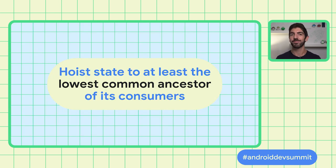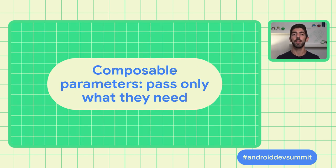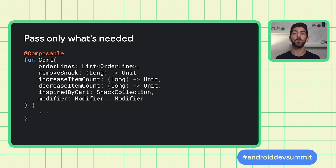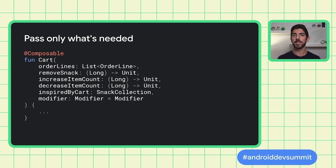How high do you hoist state? It is a matter of data ownership. When in doubt, hoist state to at least the lowest common ancestor of those composables that need access to that state. For example, the lowest common ancestor of CartItems is Cart, which is the one calling them with the right information. Composables should take only the parameters that they need. In Jesnack, we provide a stateless Cart composable that takes only what it needs — making it easier to preview, test, and reuse if we need to show it alongside another screen.